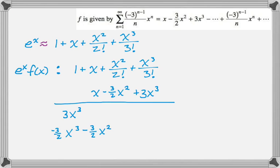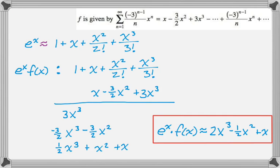Next, I'm going to move on to x. So x times 1 is x, x times x is x^2, and x times x^2/(2!) is just 1/2 x^3. And if I multiply x times the x^3 term, I get x^4, which is too big. So now I just collect like terms. So e^x times f(x) is approximately 2x^3 - 1/2 x^2 + x.